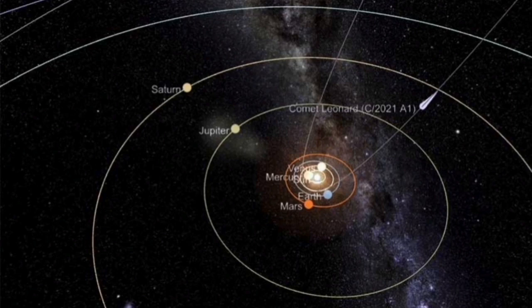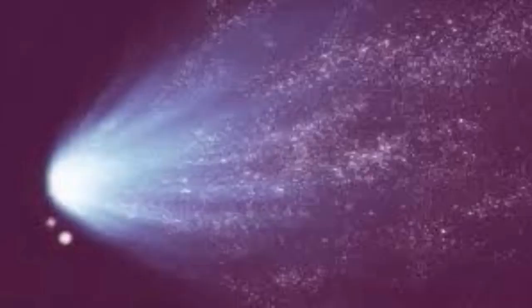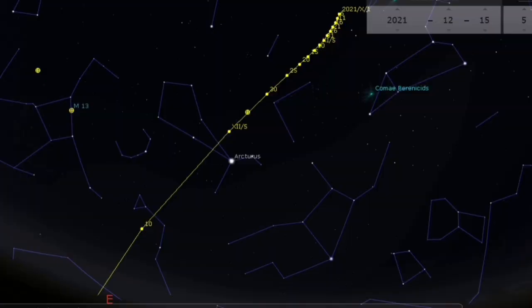At the moment, it's coming toward the inner solar system. It's between the orbit of Saturn and Jupiter, but it comes closer, really comes closer. Hopefully, we can have a beautiful display.